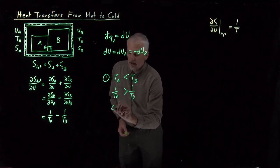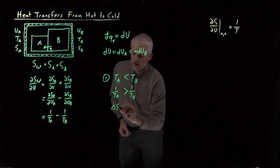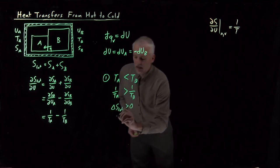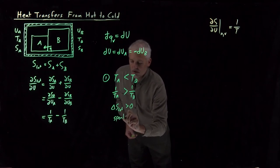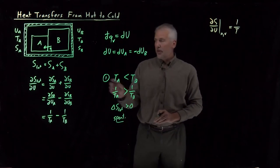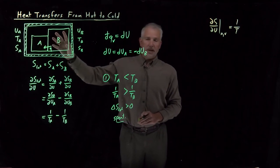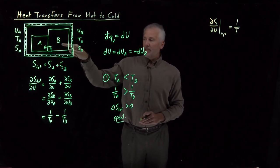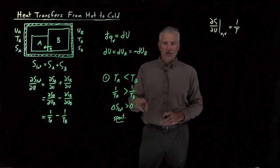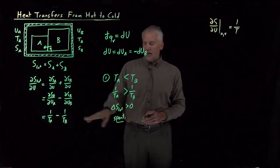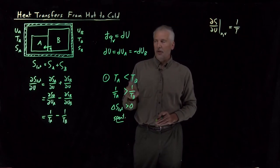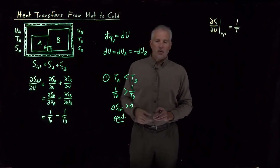So if 1 over TA is greater than 1 over TB, the difference between the two is positive. So we say the entropy of the total system is increasing, and that process is going to be spontaneous. That's not a surprise to us. If system A is cold and system B is warm, is it spontaneous that heat energy will be transferred from the hotter system to the colder system? That certainly sounds reasonable. And the math and the thermodynamics backs us up.